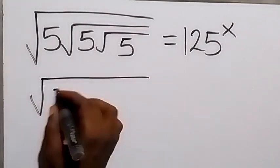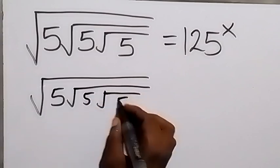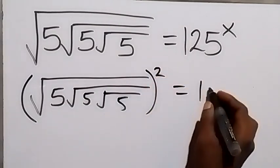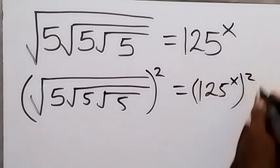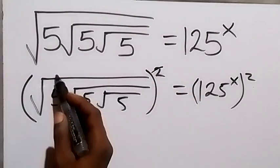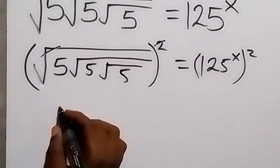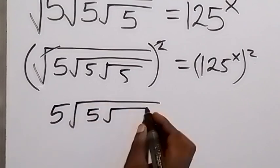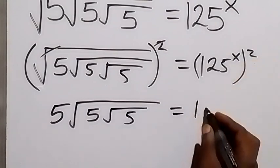So we have square root of 5 root 5 then root 5, all squared, equals to 125 raised to power x squared. We square both sides, and this square cancels the first square root, so this will become 5 root 5 then root 5. It will become 125 raised to power 2x.